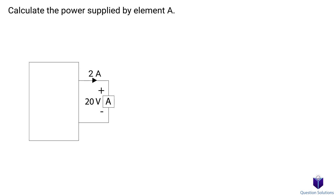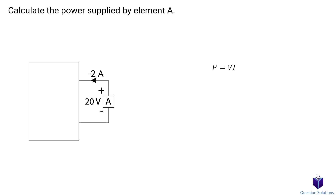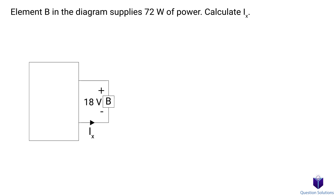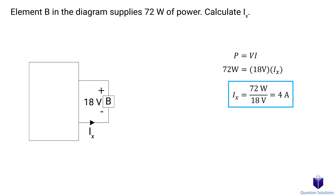Let's figure out the power supplied by element a. The wording is important — 'supplied' means element a is a power source, so current must leave the positive terminal. However, the arrow shown points toward the positive terminal, meaning the actual current is opposite: −2 amps. Power equals voltage times current, giving us negative 40 watts. In another example, element b supplies 72 watts — since the arrow correctly leaves the positive terminal, we divide 72 W by 18 V to get a current of positive 4 amps.